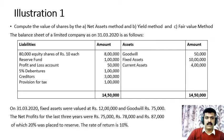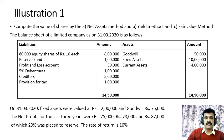To calculate the value of shares under the net assets method, we first ascertain the net assets available for equity shareholders. We take the market value of assets — Fixed Assets at ₹12 lakhs, Goodwill at ₹75,000, and Current Assets at ₹4 lakhs — then deduct outside liabilities, which include 5% Debentures, Creditors, and Provision for Tax. The remaining balance is the net assets available for equity shareholders. Since no preference share capital is given, intrinsic value per share equals net assets divided by total equity shares of 80,000.